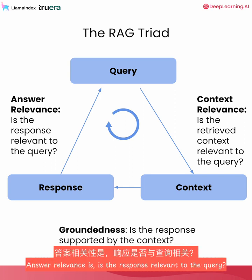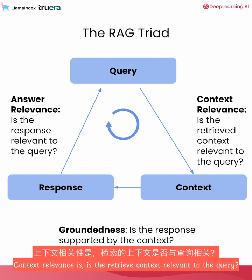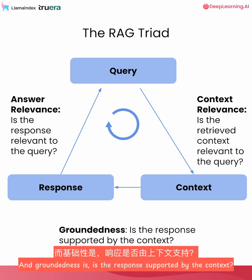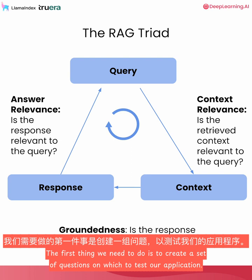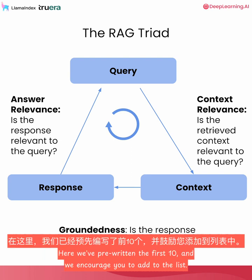Answer relevance is: is the response relevant to the query? Context relevance is: is the retrieved context relevant to the query? And groundedness is: is the response supported by the context? We'll walk through how to set this up yourself in the next few notebooks. The first thing we need to do is to create a set of questions on which to test our application. Here, we've pre-written the first 10, and we encourage you to add to the list.